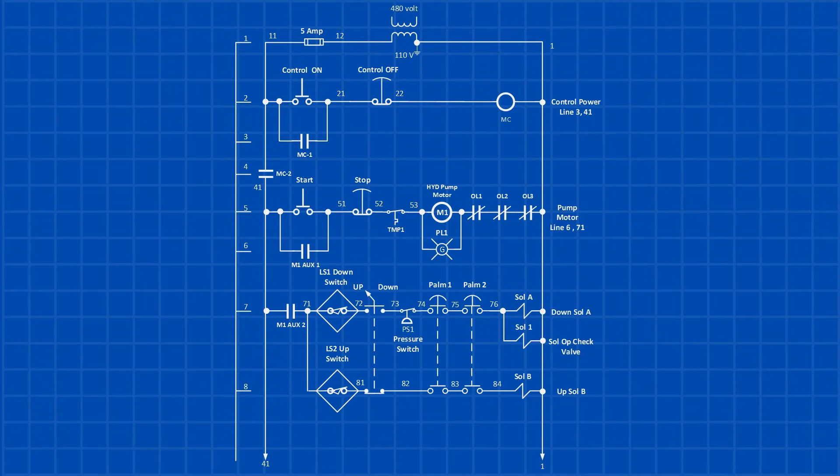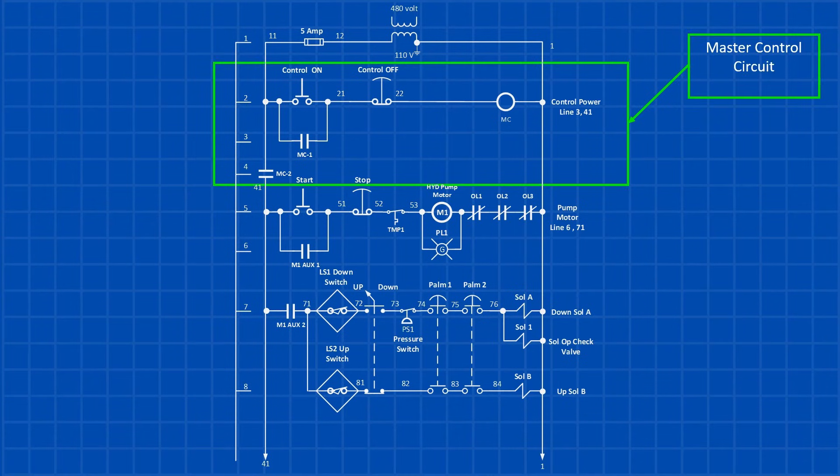Now let's look at the press ladder diagram. The first section of this ladder diagram is the master control circuit, which you'll typically find in most control panels. The master control relay, MC, is a latching relay that powers the entire circuit once energized.